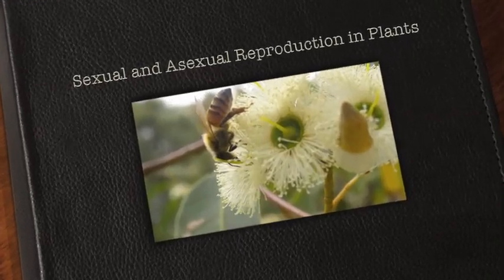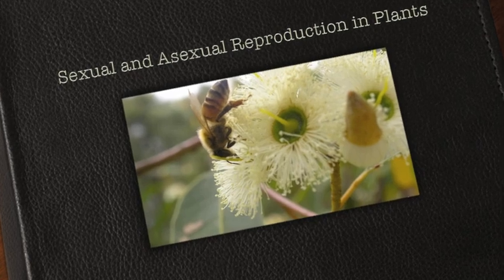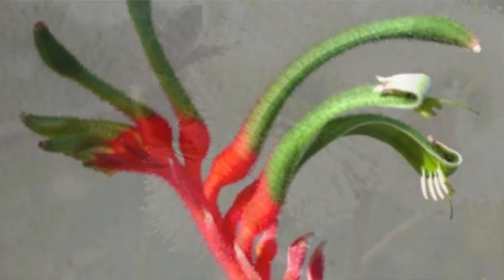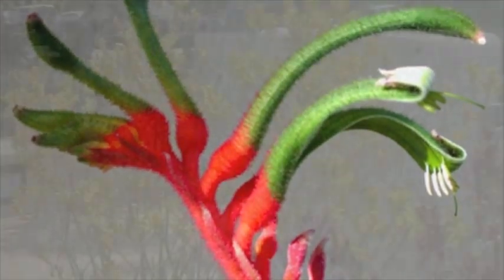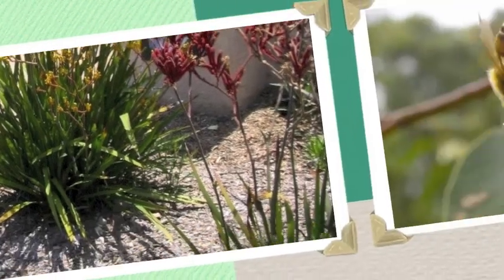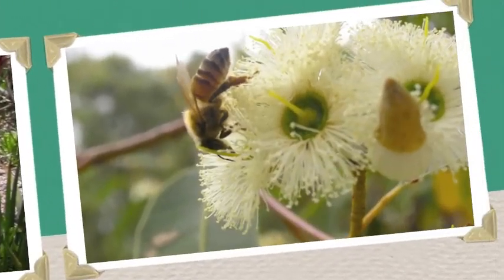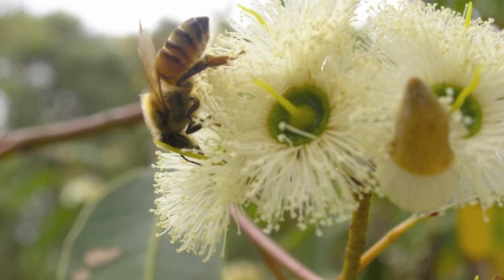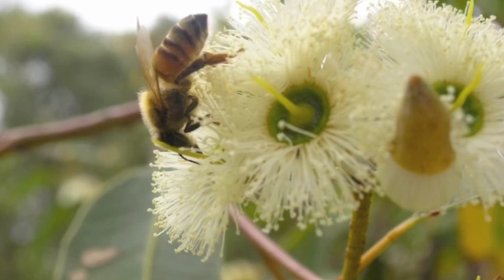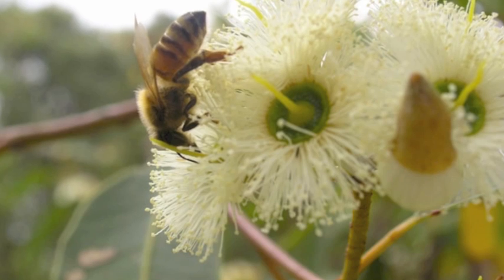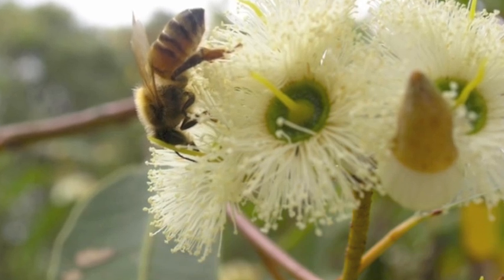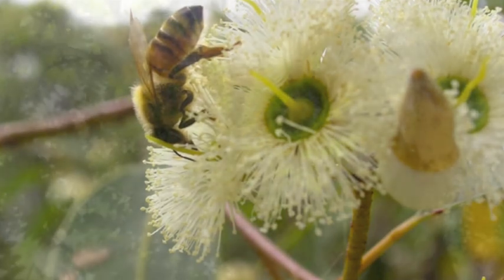To ensure the continuation of the species, organisms use two methods of reproduction: sexual and asexual. Sexual reproduction involves the fusing of two gametes, one from each parent, to form new organisms. Asexual reproduction does not require a second parent.